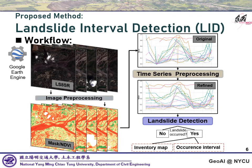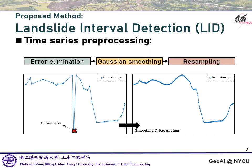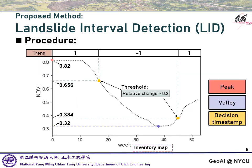The proposed method includes three major parts: image pre-processing, time series pre-processing, and the detection part — generating an inventory map and occurrence time interval. In the image pre-processing part, we obtain surface reflectance images from Google Earth Engine and apply the QA band to mask out cloud pixels, then calculate the NDVI index. Time series pre-processing includes error elimination and Gaussian smoothing. We then apply linear interpolation to regularize the time series. The idea of Lead is to extract multiple local extremal points so we can identify landslide events using delta NDVI.